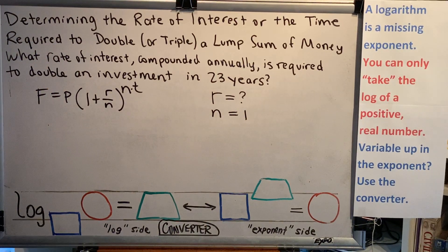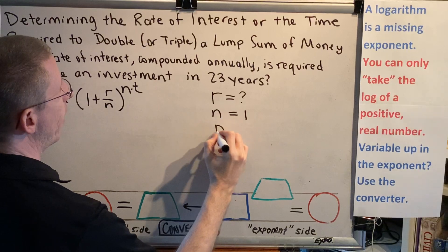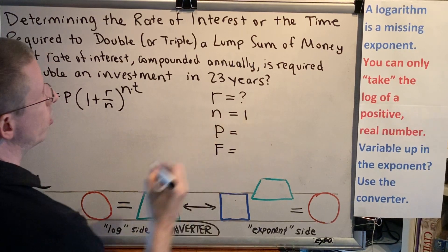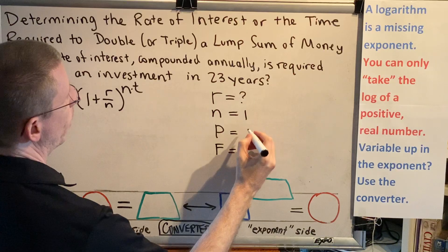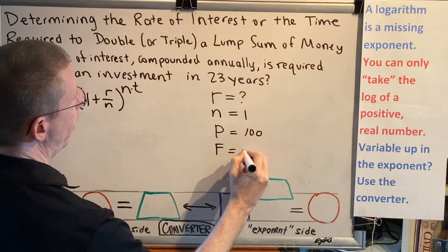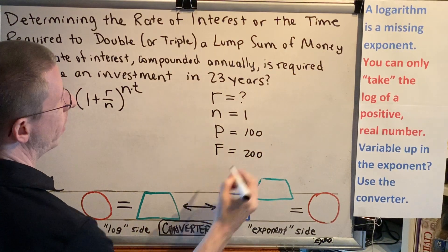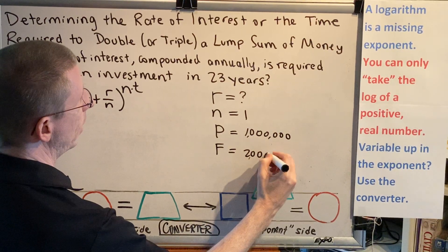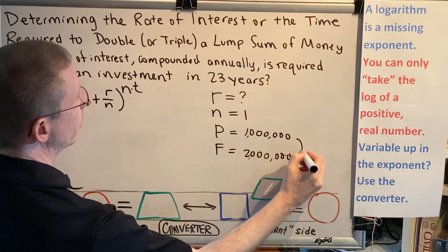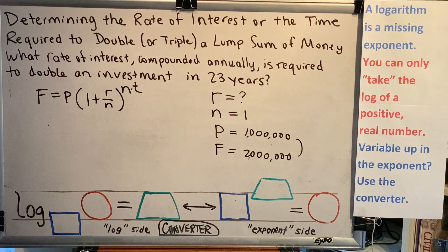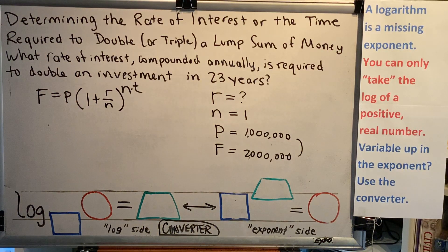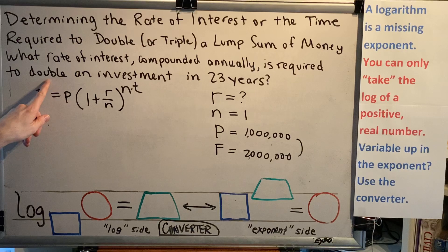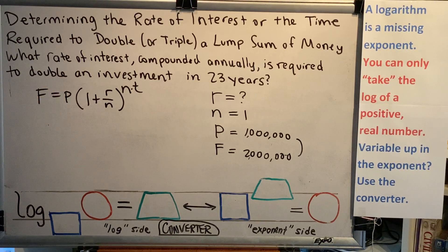To double an investment means whatever P is equal to, F will be 2 times that value. For example, if P is 100, then F will be 200. But if P is 1 million, then F will be 2 million. It doesn't matter what two numbers you use because you're going to divide them and get 2, since doubling means multiplying by 2.